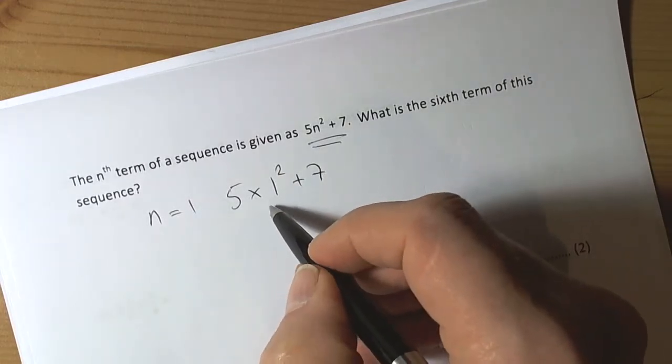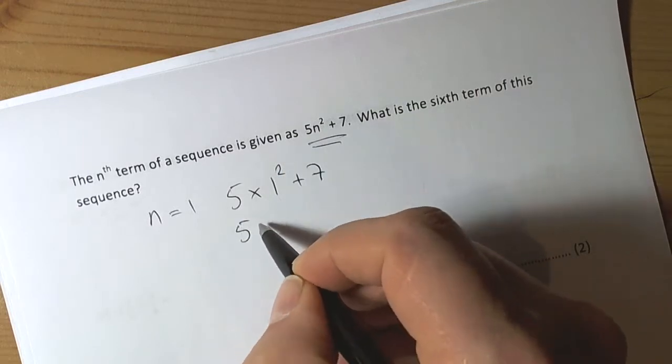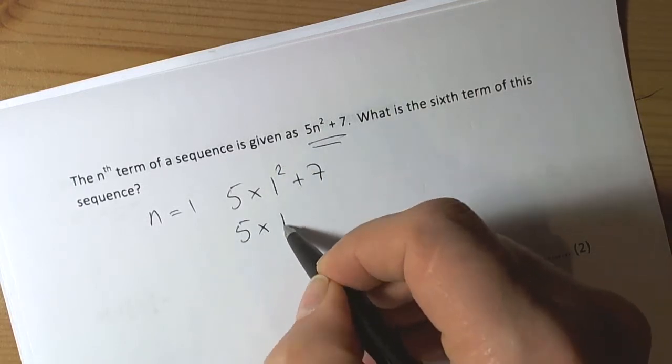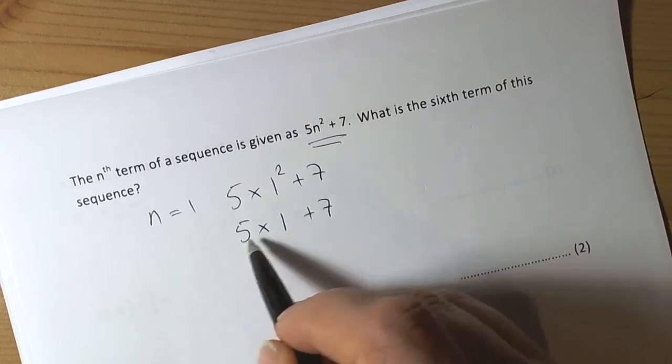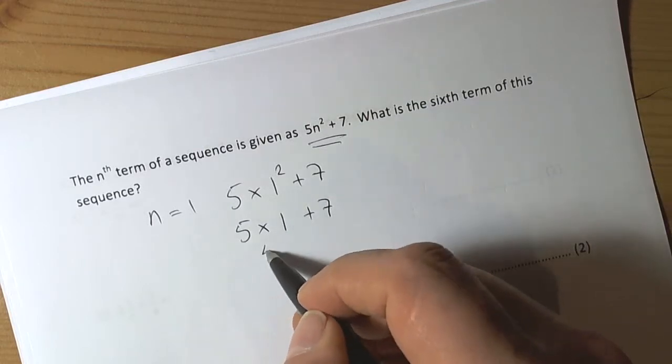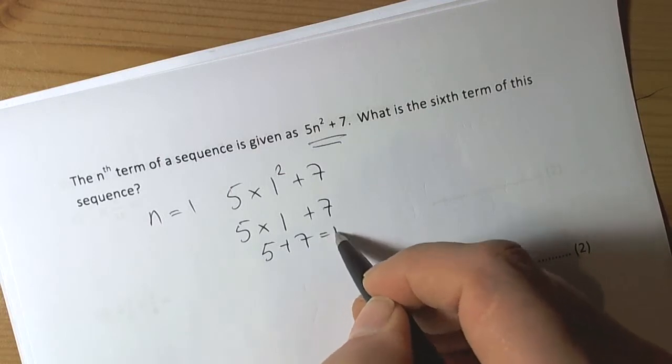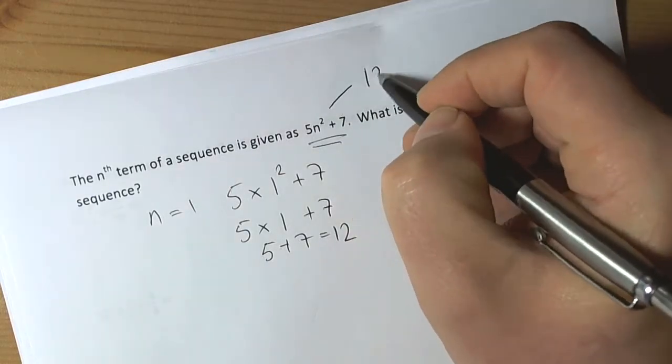Now, BIDMAS says that you do the squaring first, so it's going to be 5 times, well, 1 squared is 1, and then 7. It then tells you to do the multiplication next, and 5 times 1 is 5 plus 7, so 12. So this sequence is going to start with 12.